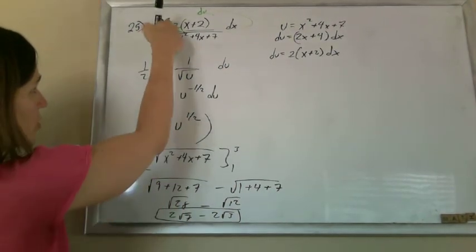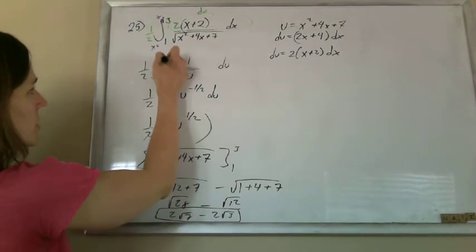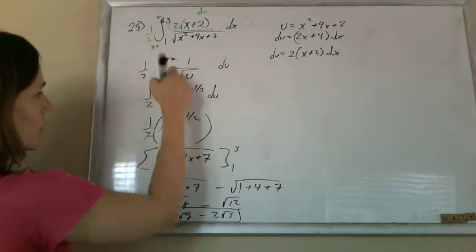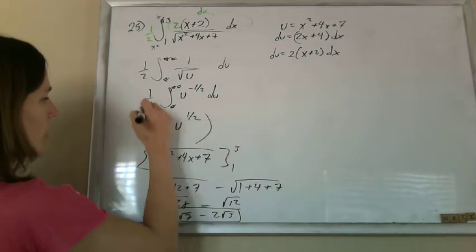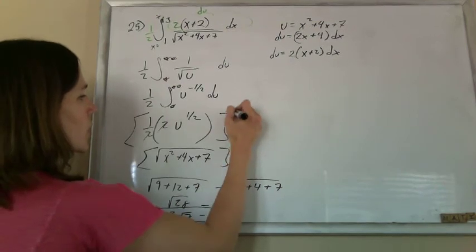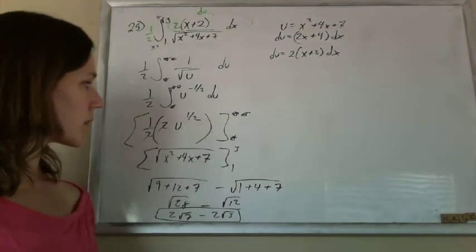I should make note that I dropped the limits. These limits were in terms of x. So some teachers get really freaked out if you have 1 and 3 here, because technically these limits should be in terms of u. And I should have these little stars going on, or I should replace them. But I'm all right. So that's that.